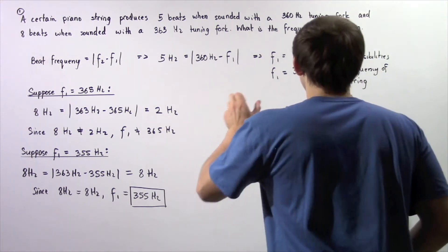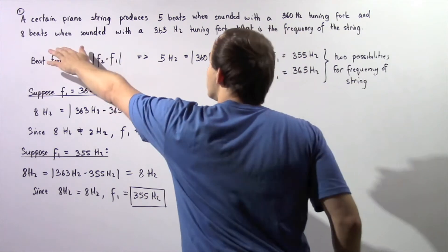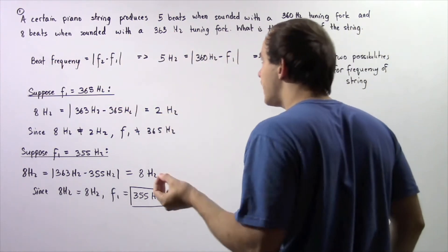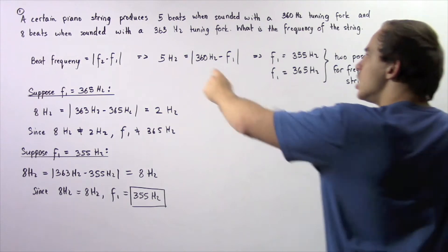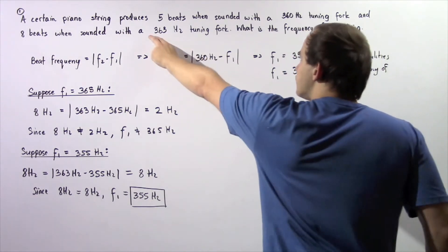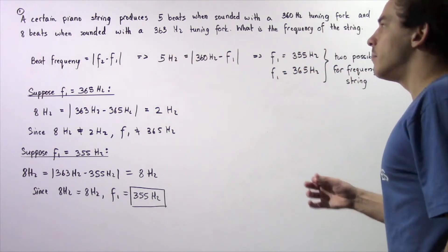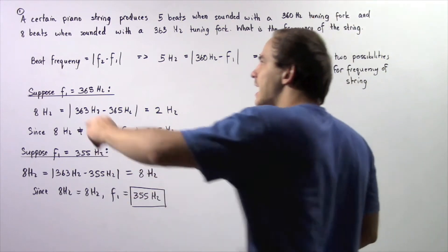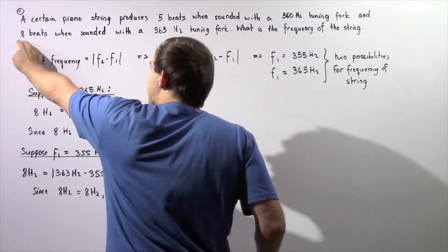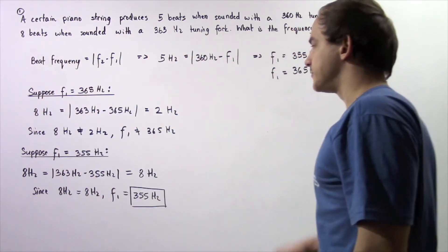Now, we have to use the second part of our problem, which tells us that if we place a second tuning fork with a different frequency given by this quantity, the number of beats heard every single second is 8. So, we have to use this result.